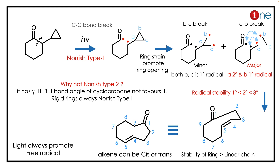You have the new cyclic compound — it's a nine-membered ring with a ketone and an alkene. The concept to note here is the Norrish Type 1 reaction: it's an alpha-carbonyl opening reaction that always forms a radical-induced ring product.